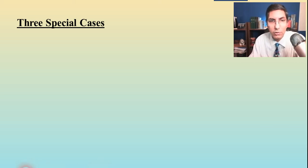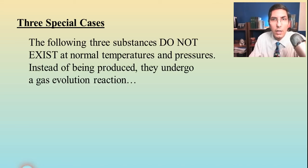There are actually a few special cases that you need to be aware of when you're writing net ionic equations. There are three substances that do not exist, as far as we're concerned, at normal temperatures and pressures. So if you see these substances that pop up as a product in your reactions, you need to write them differently.